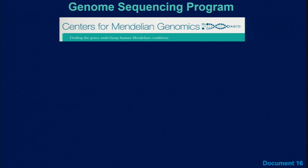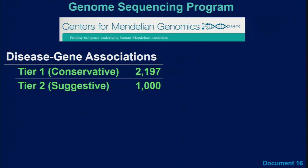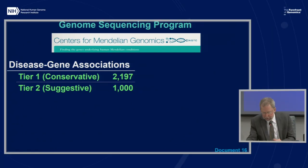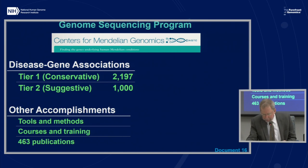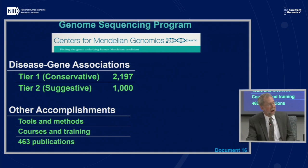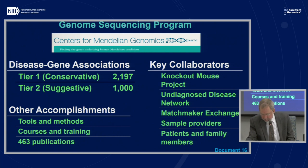The Centers for Mendelian Genomics use genome sequencing to discover the genomic basis of as many Mendelian diseases as possible. By sequencing roughly 45,000 individuals, these centers have discovered more than 3,000 disease gene associations — over 2,100 meeting conservative Tier 1 criteria and the remaining 1,000 meeting suggestive Tier 2 criteria. The centers have helped accelerate discoveries globally by releasing tools and methods, and through courses and training are empowering researchers. They have been involved in more than 450 publications. Key collaborators include the Knockout Mouse Project, the Undiagnosed Diseases Network, Matchmaker Exchange, thousands of sample providers, and tens of thousands of patients and family members.